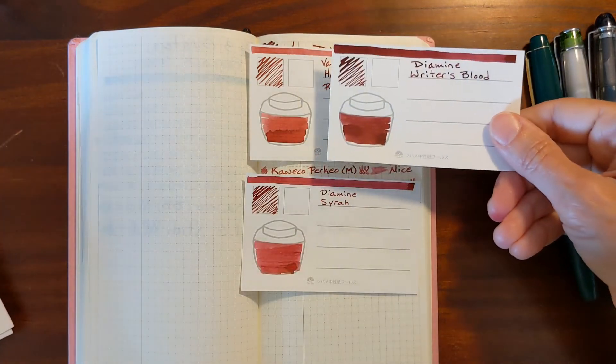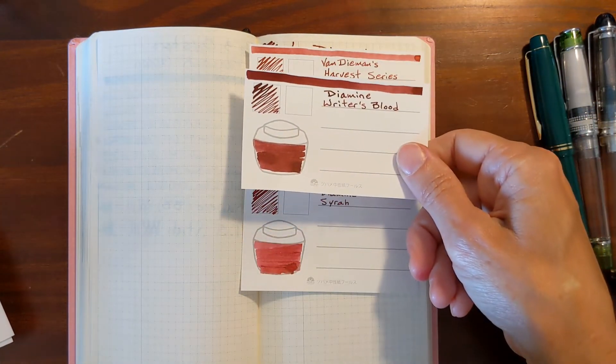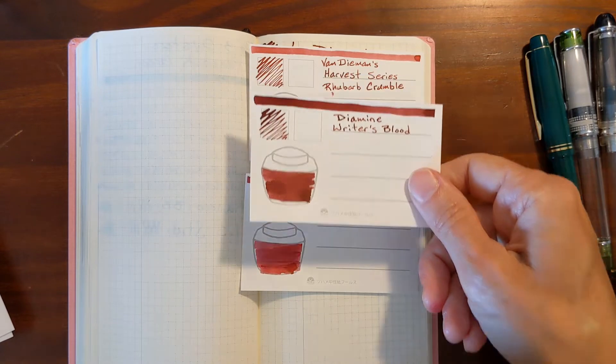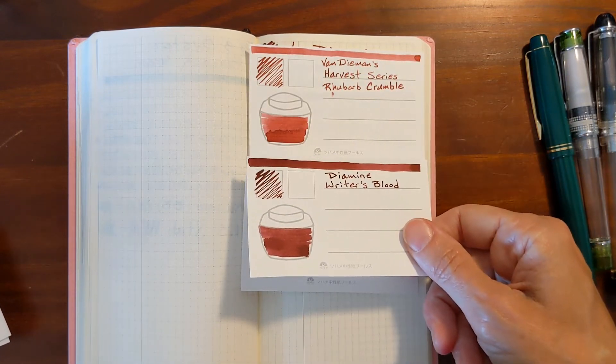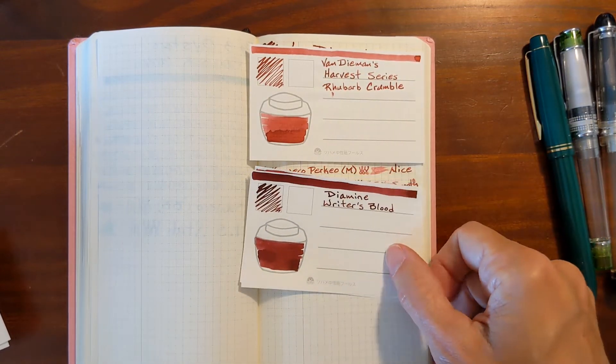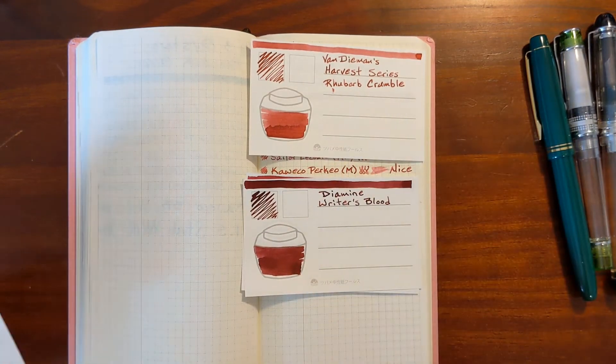Writer's Blood, I chose, it's the same type of color, but it's much more saturated. But it's a similar performing ink in that both of these were really wet writers.